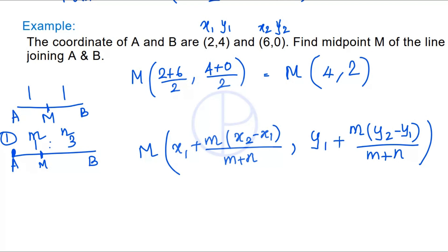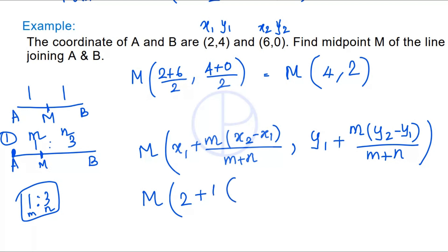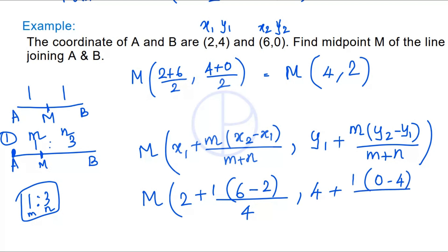Let's find the point when line AB is divided in the ratio 1:3. Here M is not the midpoint. M is the point that splits line AB in the ratio 1:3. So x1 = 2, m = 1, n = 3: M_x = 2 + 1×(6 − 2) / (1 + 3) = 2 + 4/4 = 3. And M_y = 4 + 1×(0 − 4) / 4 = 4 − 1 = 3.